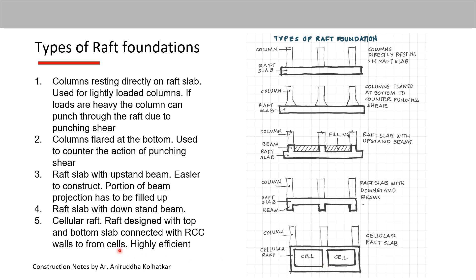The fifth sketch is called the cellular raft. In this case, the raft is designed with a top and bottom slab connected with RCC walls to form cells. As a result, the effective depth of the raft increases quite a bit, making this highly efficient compared to the other raft types seen earlier. This should be enough to answer a question on types of raft foundations.